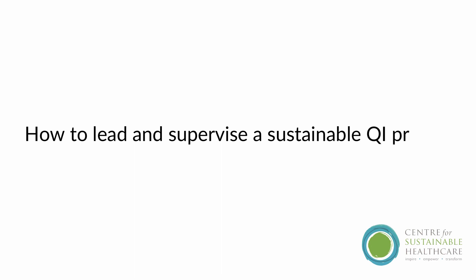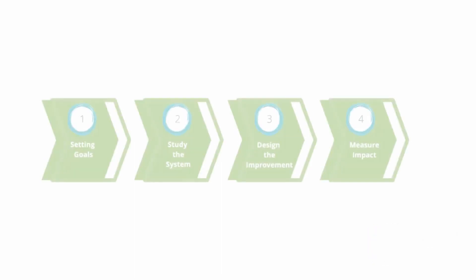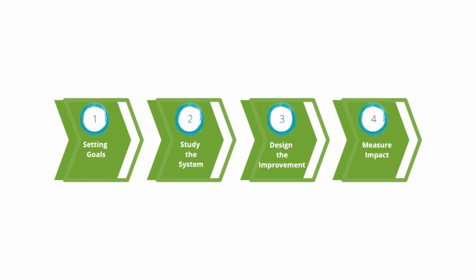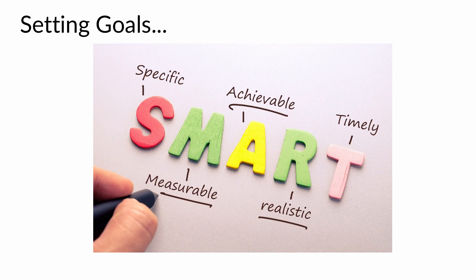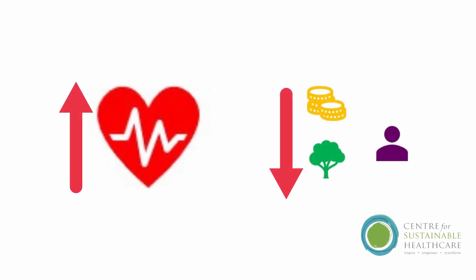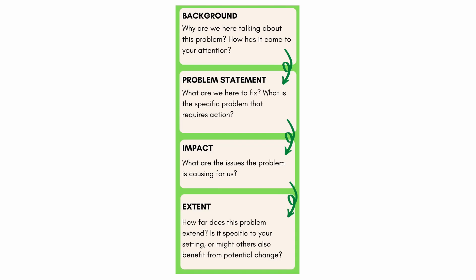So let's talk about how to lead and supervise a sustainable QI project. What are some of the tools you might need? The SUSQI approach has four steps. Firstly, setting goals. Much like standard QI, this is all about setting specific or SMART goals. In SUSQI, the overarching goal of healthcare improvement is to deliver maximum health gain with minimum financial cost and harmful environmental impacts, whilst adding social value at every opportunity. Encourage learners to think about what aspect of healthcare provision they could focus on — a pathway, a procedure or process step. You can think about the background of the problem, why it has come to your attention, fix a problem statement, understand the impact of the problem and its extent, and who might benefit from potential changes.